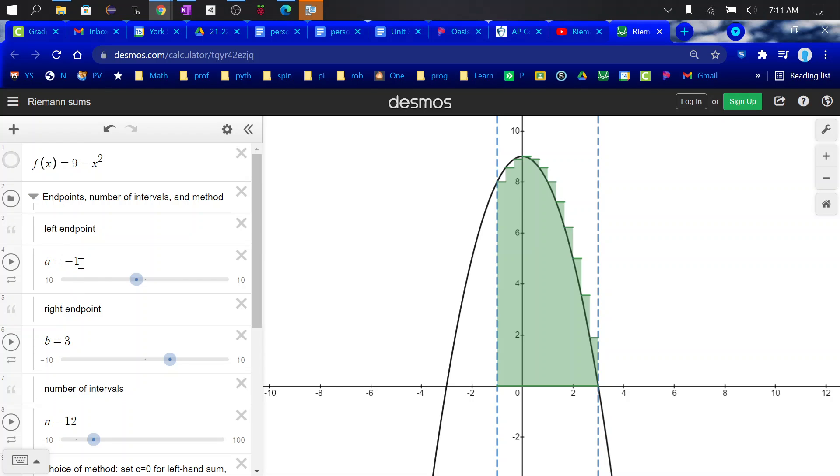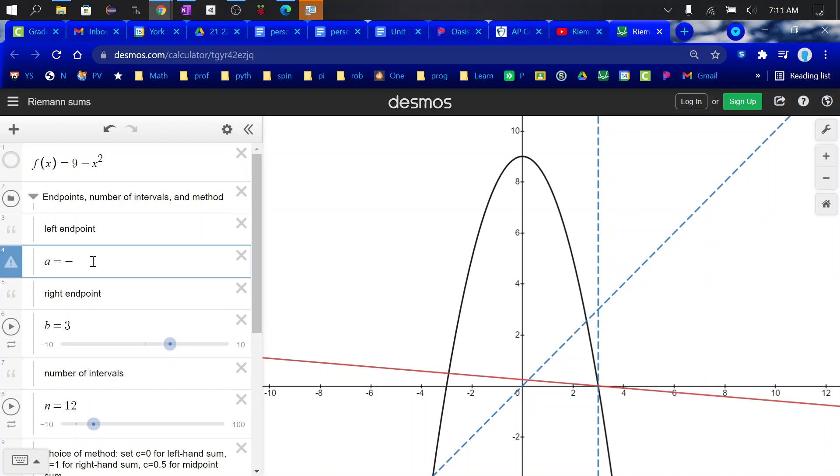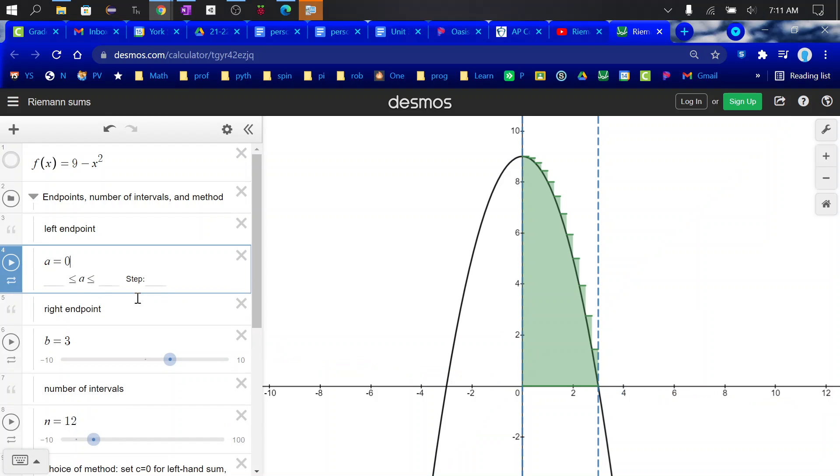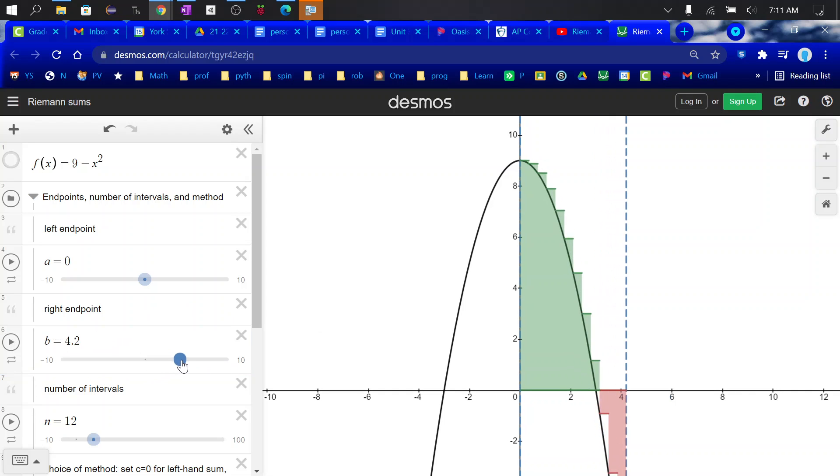Your left endpoint is the A. If you want to change that, you obviously can. And you can also slide it. So B is a 3 right here. If I were to move it around, you can see that you're going to have some negative area in red.